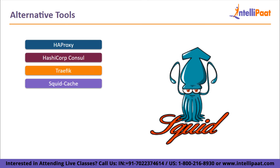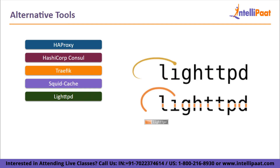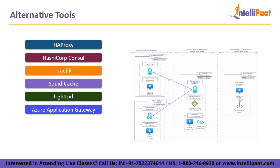Next up, we have Squid Cache. Squid Cache is a web caching proxy that supports HTTP, HTTPS, and FTP. By caching and reusing, it decreases bandwidth and enhances response time. Next up, we have LightTPD, an open source web server designed for environments where performance is crucial, but still complies with standards, is safe, and is customizable. Next, we have Azure Application Gateway. You may create a scalable and highly available web front-end on Azure by using the application-level routing and load balancing services provided by Azure Application Gateway.